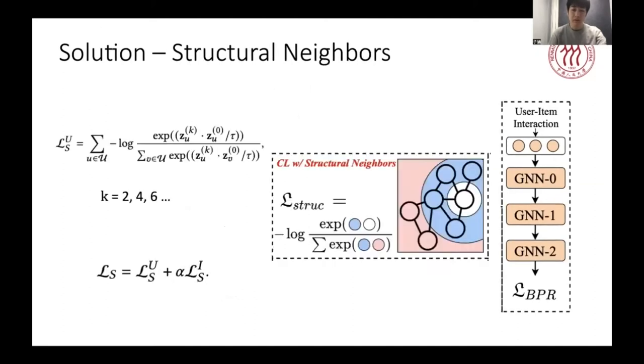For contrastive learning with structural neighbors, we construct the representation of each node with the representation of its high-order neighbors, and treat all other nodes as negative samples to conduct the contrastive learning in the way of InfoNCE. The loss on users and items are calculated similarly and merged by a hyperparameter alpha.